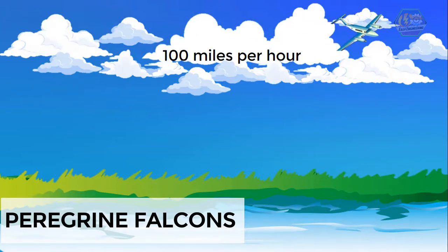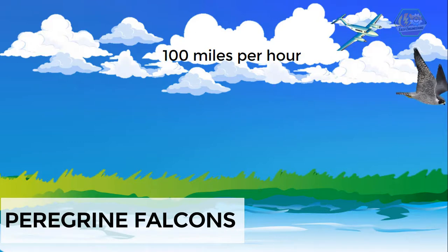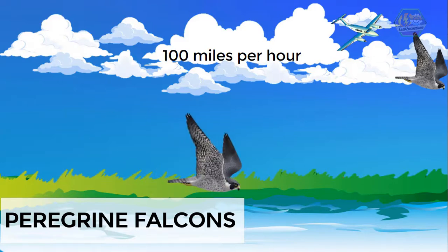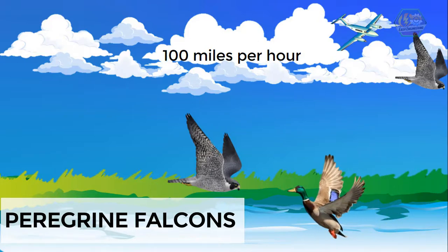Hollow bones also help birds fly even higher because they are lighter compared to solid bones. Besides flapping, there are other techniques birds use to fly. They can stretch out their wings and glide slowly down towards the ground without flapping. Ducks often glide down to land in water.